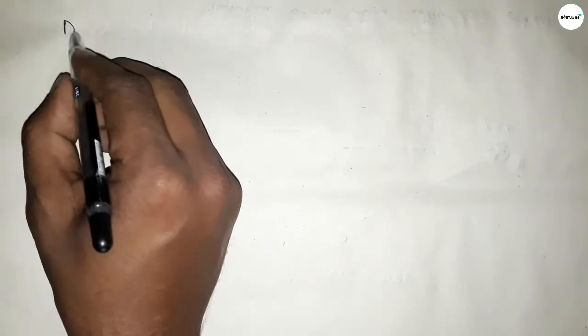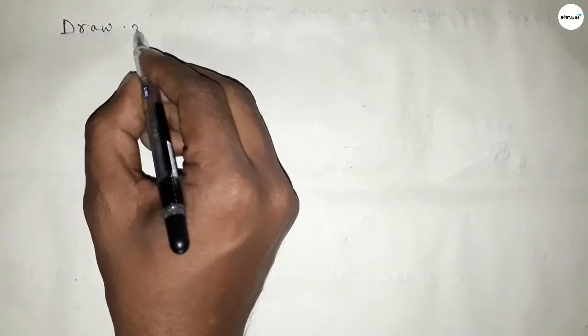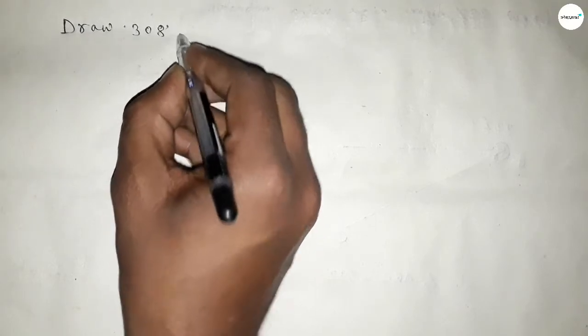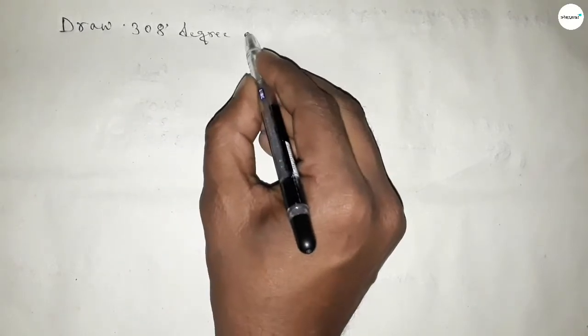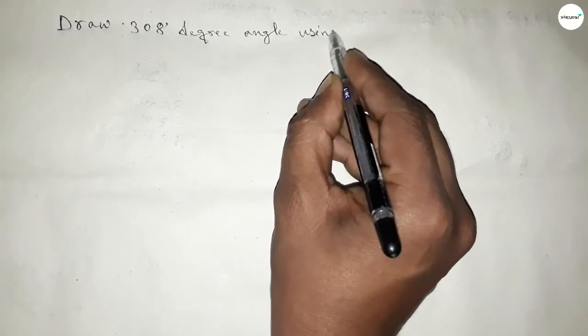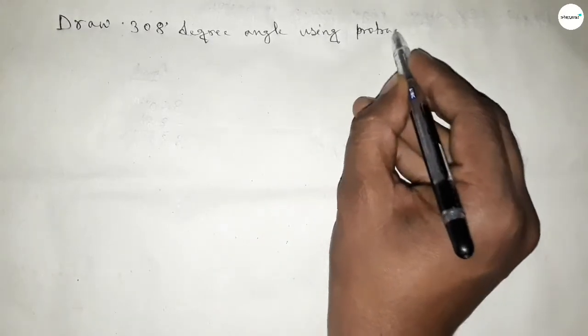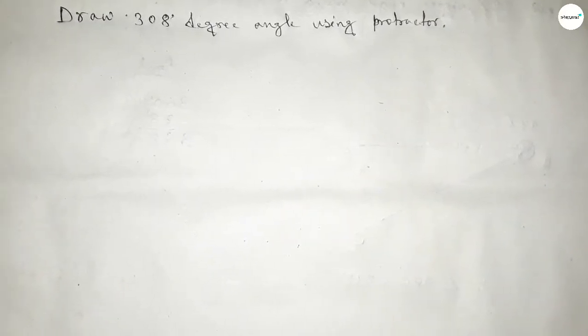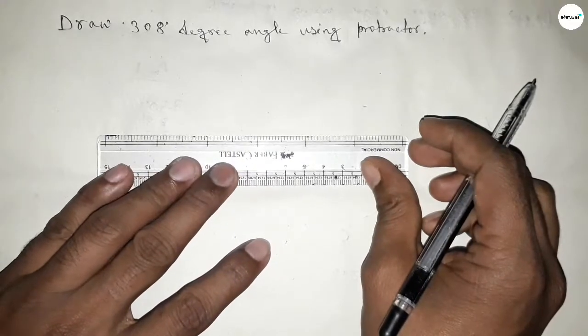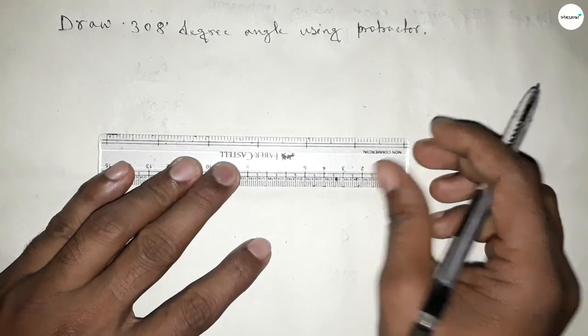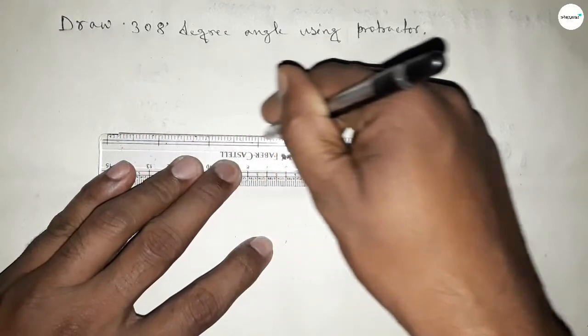Hi everyone, welcome to SSR Classes. Today in this video we have to draw a 308 degree angle using a protractor. So let's start the video. First of all, we have to draw here a straight line of any length.